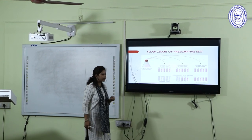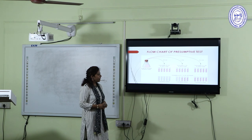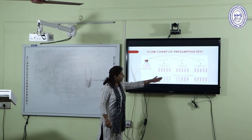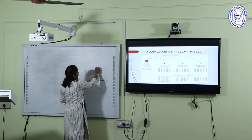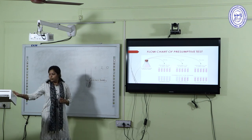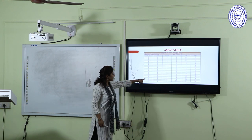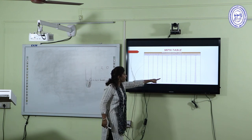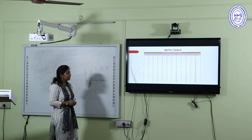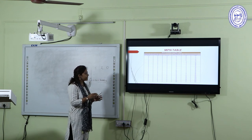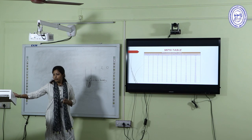After incubation, we identify which tubes show positive results. For example, if 5 tubes from the first set, 2 from the second, and 0 from the third set are positive, that gives data of 5-2-0. This is entered into the MPN table to get the coliform count. For instance, 5-2-1 shows 49 coliforms per 100 mL of water sample, giving an idea of whether the water is potable or not.